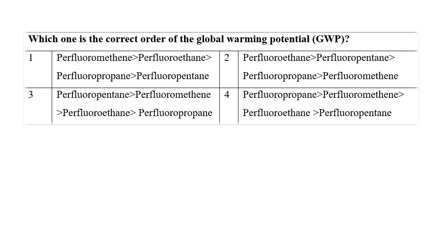Question eleven: Which one is the correct order of global warming potential for these different perfluoro substances? The highest global warming potential belongs to perfluoroethane, followed by perfluoropentane, then perfluoropropane, and the least is perfluoromethane. So option B is the right answer: ethane, pentane, propane, and methane in descending order of GWP.